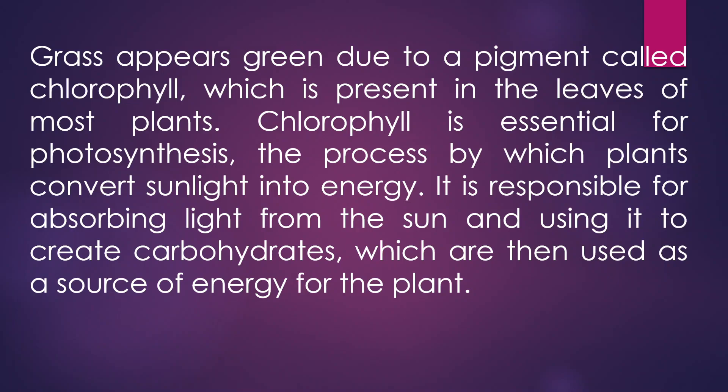Grass appears green due to a pigment called chlorophyll, which is present in the leaves of most plants. Chlorophyll is essential for photosynthesis, which is the process by which plants convert sunlight into energy. It is responsible for absorbing light from the Sun and using it to create carbohydrates, which are then used as a source of energy for the plant.